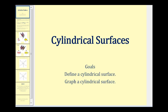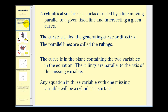Welcome to a lesson on cylindrical surfaces. The goals of this video are to define a cylindrical surface and also to graph a cylindrical surface. A cylindrical surface is a surface that is traced by a line moving parallel to a given fixed line and intersecting a given curve. The curve is called the generating curve or the directrix, and the set of parallel lines are called the rulings.